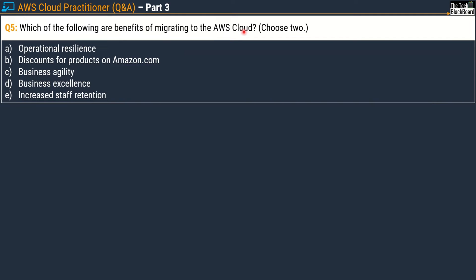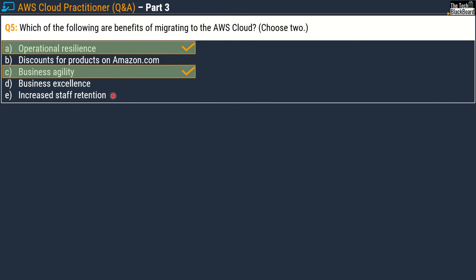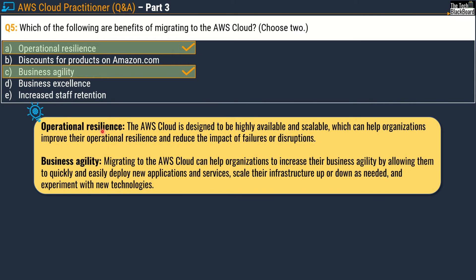Question number five: which of the following are benefits of migrating to the AWS cloud? Please pick two correct answers. Options are: A) operational resilience, B) discounts for products on amazon.com, C) business agility, D) business excellence, E) increased staff retention. The correct answers are Option A, operational resilience, and Option C, business agility. AWS cloud is designed to be highly available and scalable, which helps organizations improve operational resilience and reduce the impact of failures. Migrating to AWS also increases business agility by allowing organizations to quickly deploy new applications, scale infrastructure as needed, and experiment with new technologies.